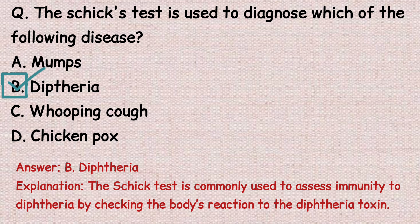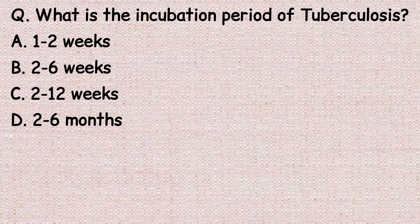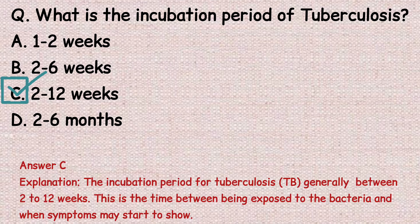The next question: what is the incubation period of tuberculosis? Option A: 1 to 2 weeks. Option B: 2 to 6 weeks. Option C: 2 to 12 weeks. Option D: 2 to 6 months. The correct answer is option C, 2 to 12 weeks. The incubation period for tuberculosis is generally between 2 to 12 weeks — this is the time between exposure to the bacteria and when symptoms may start to show.